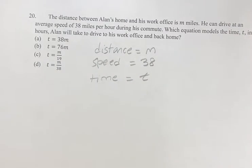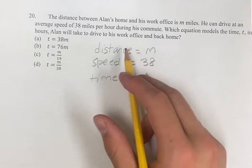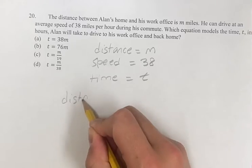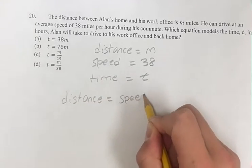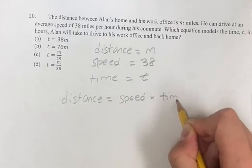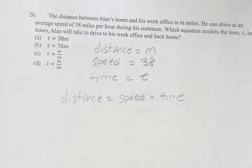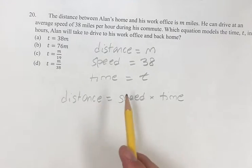Now which equation out of these represents the time it will take for Allen to drive home? We have to use these in the form distance equals speed times time. This is always true, and this is not just the case for Allen, this is something you should remember in general. Distance equals speed times time.